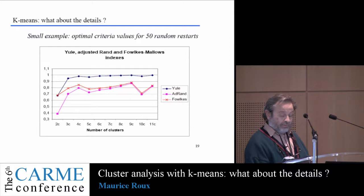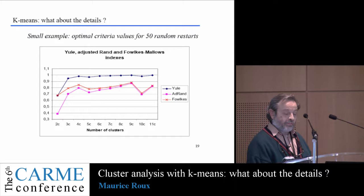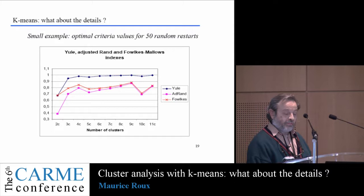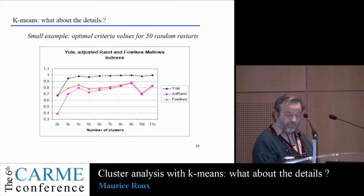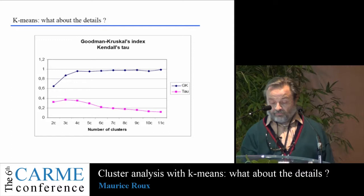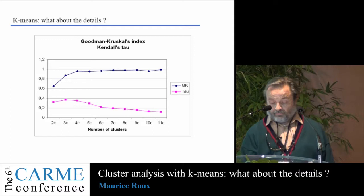Other indexes — Yule, adjusted RAND, and Folks and Mallows — all show a peak about four clusters, but they have a tendency to increase also with the number of clusters. Goodman-Cruskall seems not to be useful because it is also almost increasing all along the interval of variation of the number of clusters.